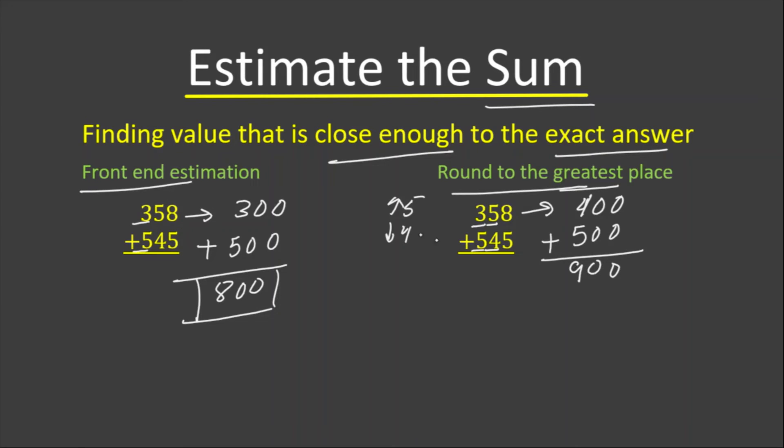When we find the estimated answer, we compare it with the exact answer. Let's now find the exact answer. The numbers I have used in these two problems are the same because I want to find out which one is giving us the closest answer. So 358 plus 545, we just add them. Eight plus five is 13.